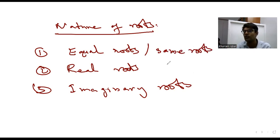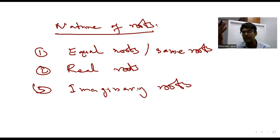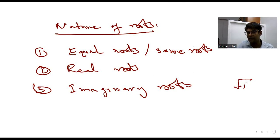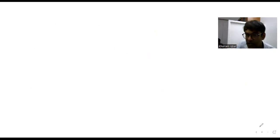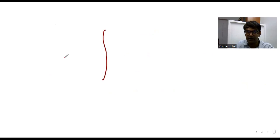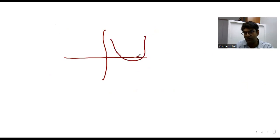Real roots का मतलब है कि दोनों values जो आ रही हैं वो real हैं, कोई actual number आ रहा है। Imaginary roots आता है जब root के अंदर minus आ जाए — जैसे √(-1) या √(-something) — तो वो iota बन जाता है। जब iota आता है तब imaginary roots आते हैं। Imaginary means वो real life में exist नहीं कर सकता। Actually quadratic equation का जो curve बनता है वो parabolic होता है।